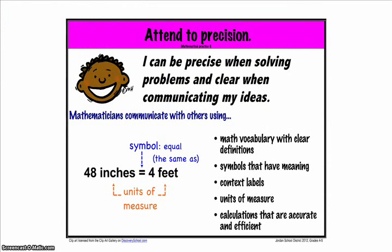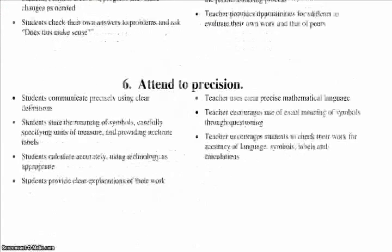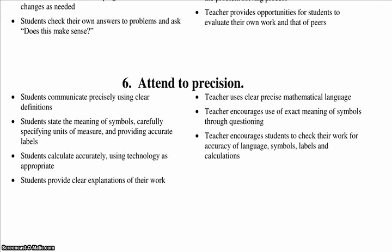Number six: attend to precision. Mathematically proficient students try to communicate precisely to others. They try to use clear definitions in discussion with others and in their own reasoning. They state the meaning of the symbols they choose, including the equal sign, consistently and appropriately. They are careful about specifying units of measure and labeling axes to clarify the correspondence with quantities in a problem. They calculate accurately and efficiently, expressing numerical answers with the degree of precision appropriate for the problem context.